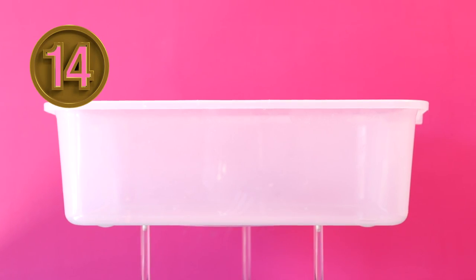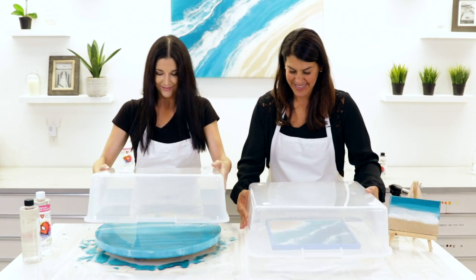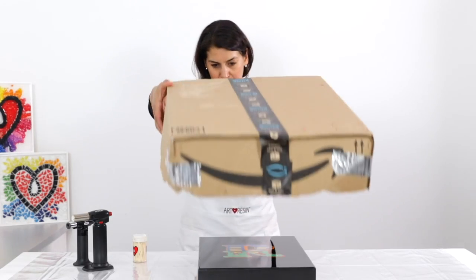Fourteen, a dust cover. Have a dust cover ready to go before you start to resin. You can use either a plastic tote or a cardboard box with the flaps removed.